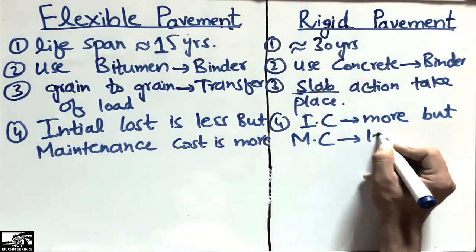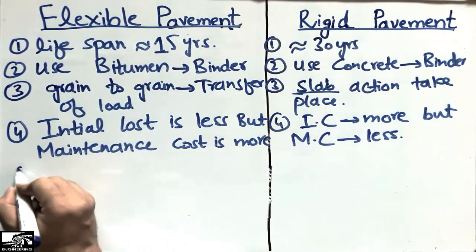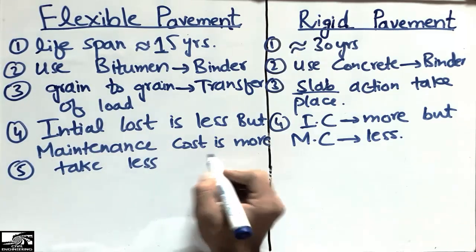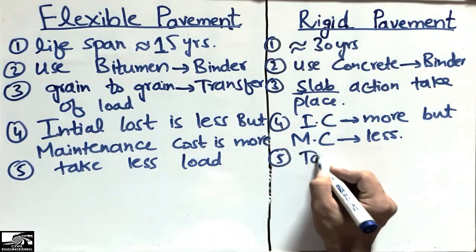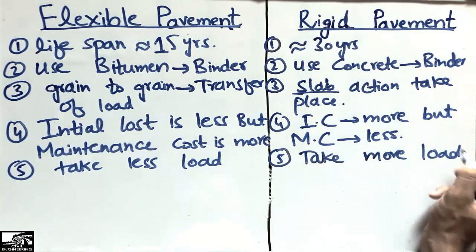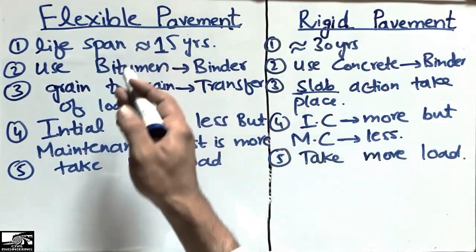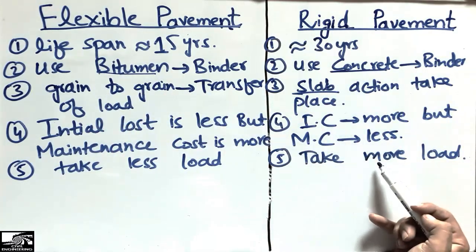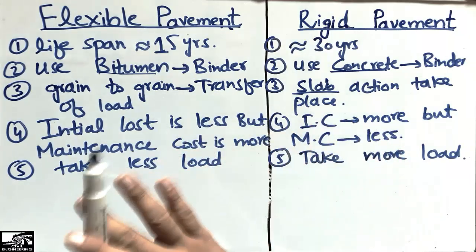Flexible pavement usually takes less load compared to rigid pavement. Rigid pavements take more load due to the behavior of concrete, which has high strength. Because of this material, rigid pavements take more load in comparison to flexible pavements, though both can carry heavy traffic loads.